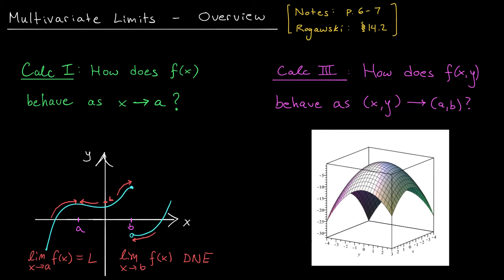We now turn our attention to the idea of a limit in Calc 3. In Calc 3, we're dealing with functions with multiple inputs. And the graphs of these functions are a lot more complicated than the graphs we knew back in Calc 1. Still, the question is going to be the same. How does our function, say f(x,y), behave as (x,y) approaches some target input (a,b)?